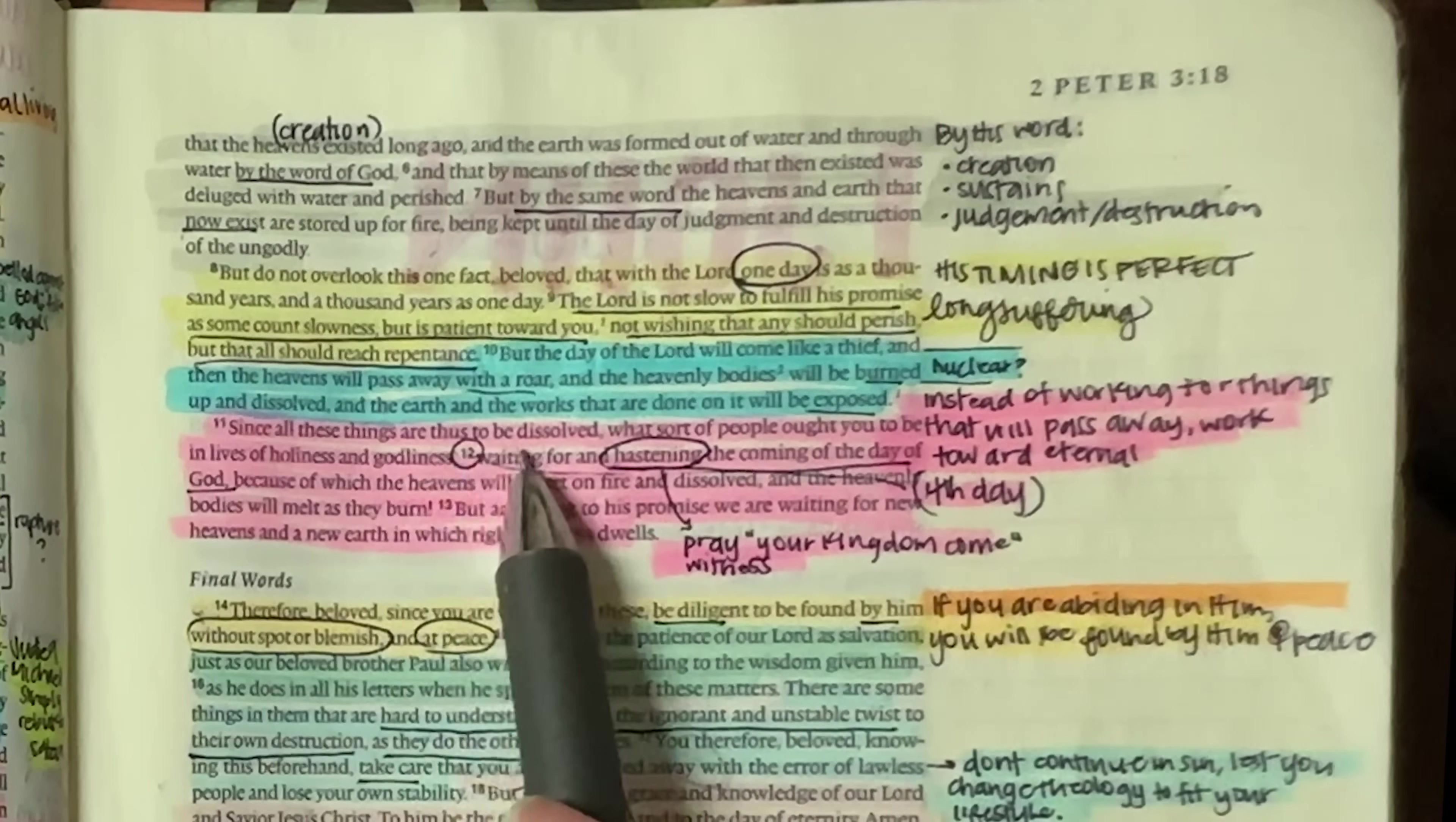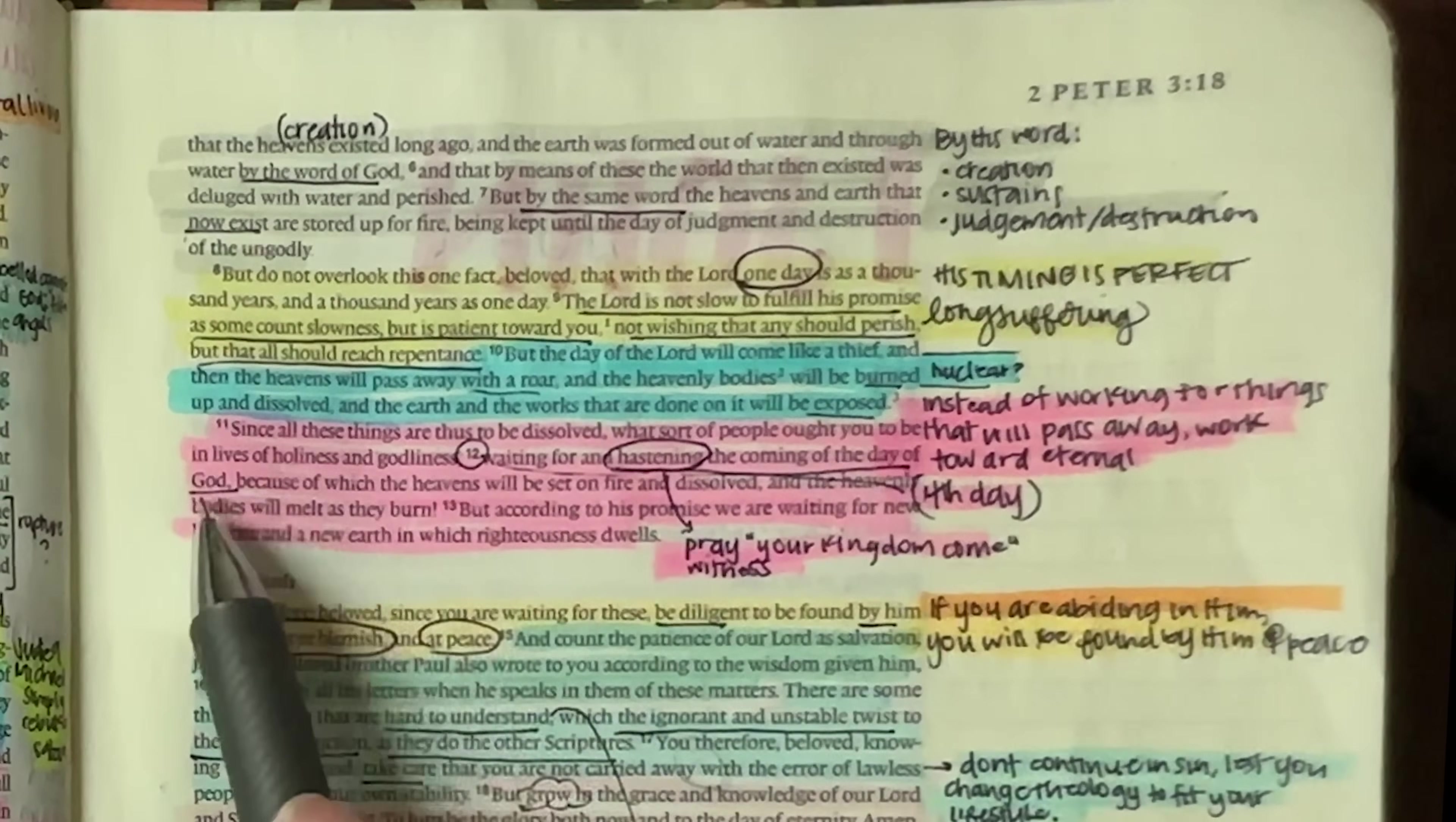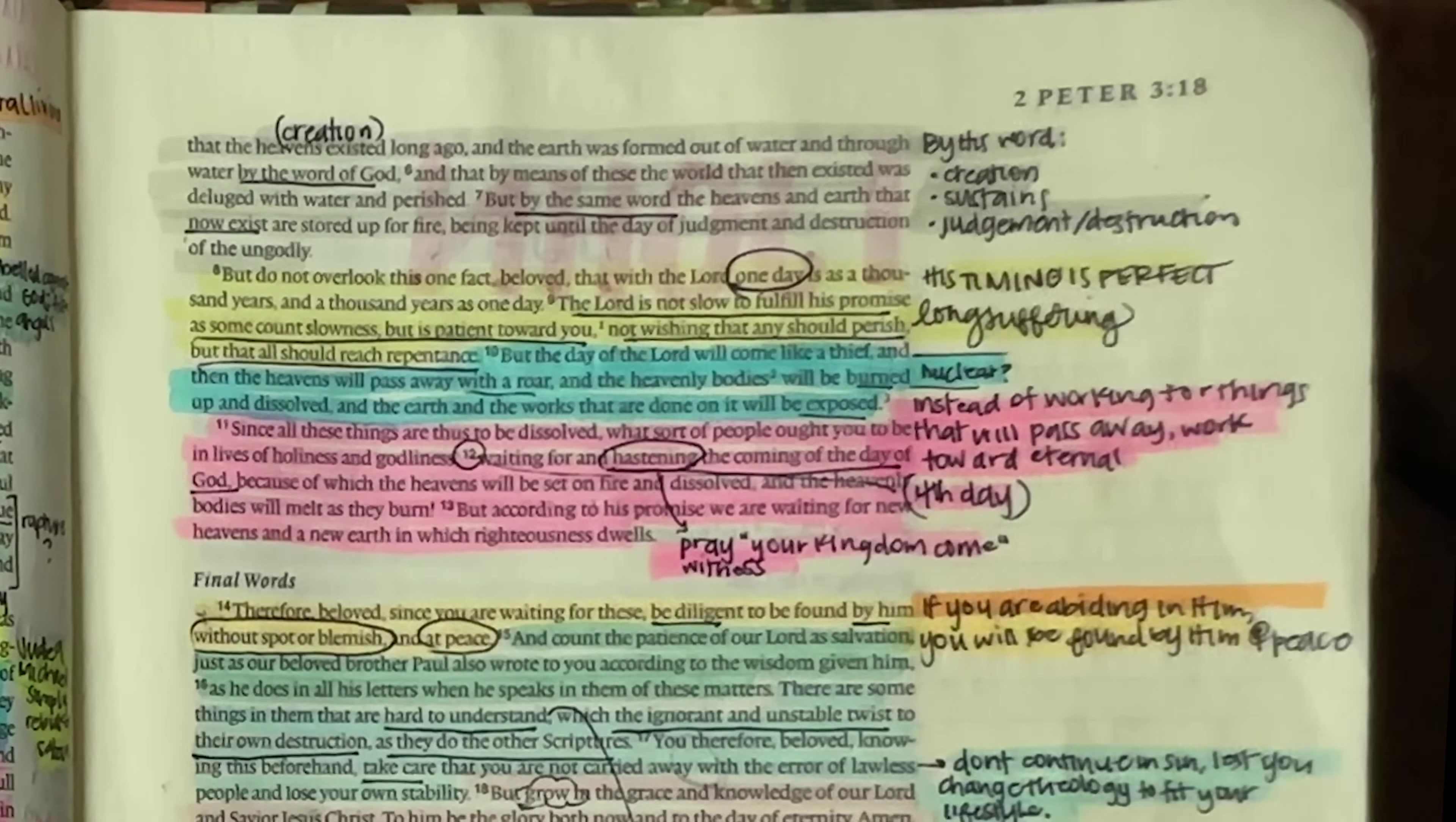Since all these things are thus to be dissolved, what sort of people ought you to live in lives of holiness and godliness? Yes, please. Waiting for and hastening the coming of the day of God. Can we really hasten the coming of the day of God? Well, I mean, if you think about it, we play a role in what will happen, right? Like our prayers that are spoken.